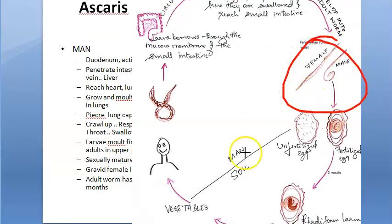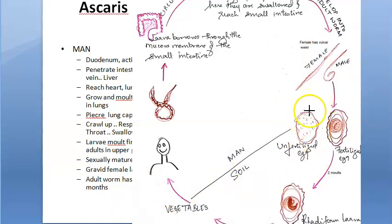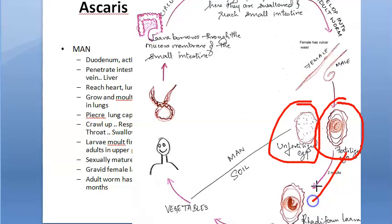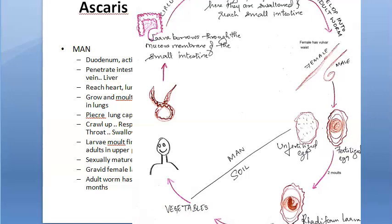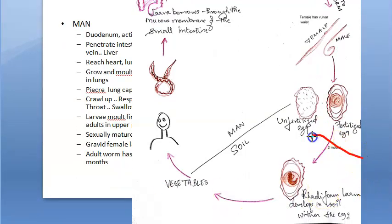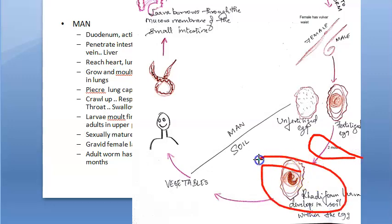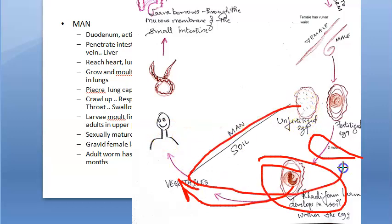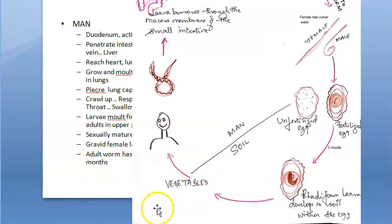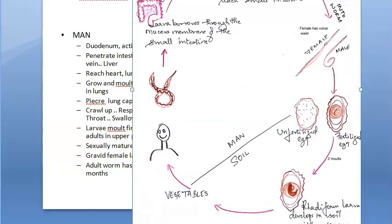The adult worms have a lifespan of one to two years. The gravid female can release both unfertilized eggs — which show granules — and fertilized eggs — which contain a large unsegmented ovum. These fertilized eggs, passed in the feces, undergo two molts in the soil to become rhabditiform larvae, the infective form. This completes the life cycle — the cycle in soil and the cycle in man.